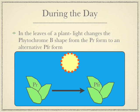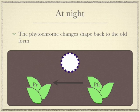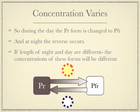During the day, the phytochrome in the leaves changes shape from the PR form on the left to the PFR form. At night time, the opposite occurs — the phytochrome changes shape back, so the PFR on the right changes back to the PR form. Because of this, the actual concentration of the different forms of phytochrome will vary depending on the day and night. You've got a reservoir of the PR form and a reservoir of the PFR form. During the night, the PFR changes to the PR, and during the day, the PR changes to the PFR.